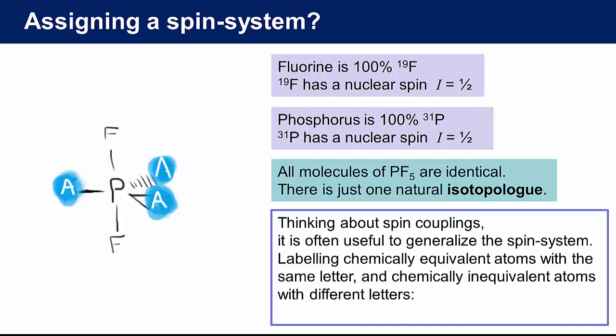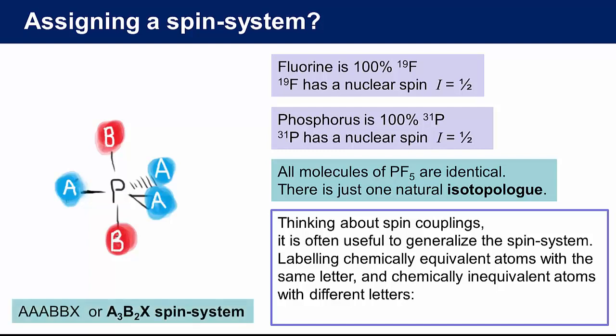So here we can label the three equatorial atoms with the letter A and the two axial atoms with the letter B while the phosphorus, which is a very different sort of nuclei, is given the letter X. So now we can generalize and say that in this case we have an A3B2X spin system.